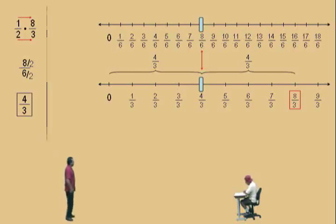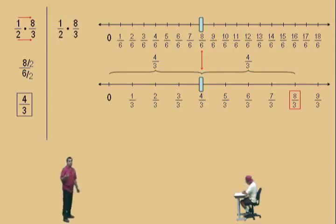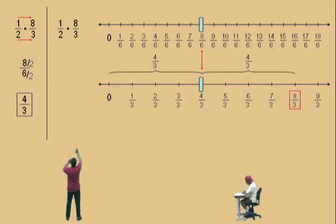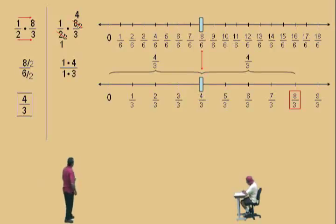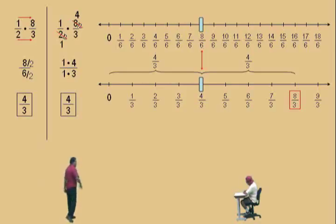Let's do the arithmetic again — we'll be doing a lot of this in the next video, Part 2. Watch, Charlie. 1 half times 8 thirds. What we're going to do is reduce before we multiply across the top and across the bottom. Some people refer to this as cross-cancelling. When you reduce fractions, you have to have a number from the top and a number from the bottom. Notice we have an 8 and a 2 — both divisible by 2. So we divide that 8 by 2 and 2 divided by 2. What's 8 divided by 2? 4. And 2 divided by 2? 1. So on top we have 1 times 4, and on the bottom we have 1 times 3. What's 1 times 4? 4. And 1 times 3? 3. We get 4 thirds. We'll do a lot of those problems in the next Part 2 video.